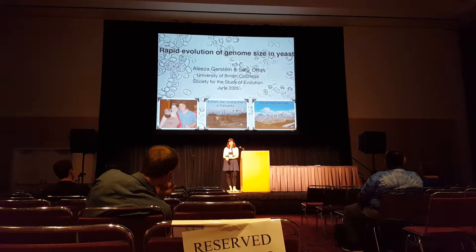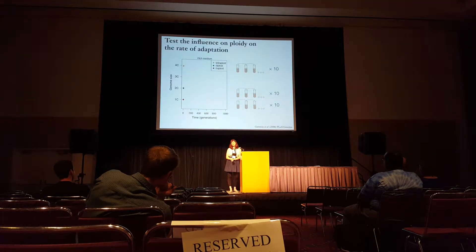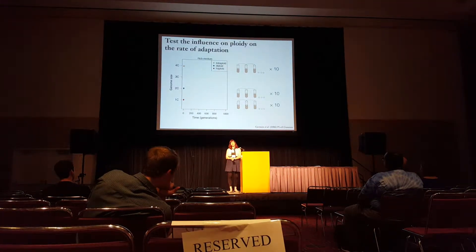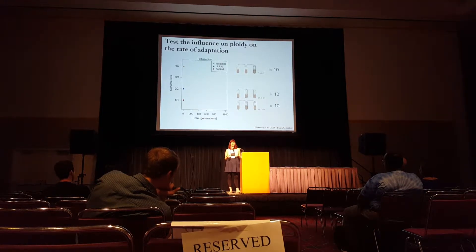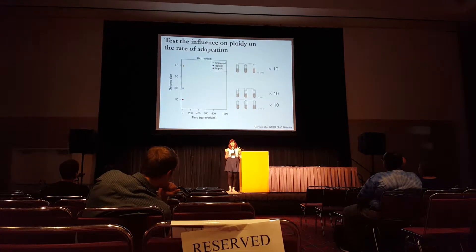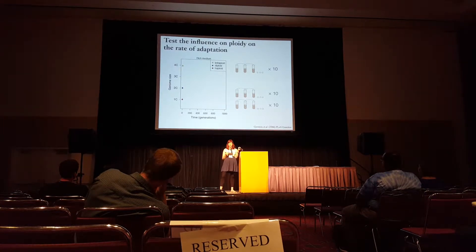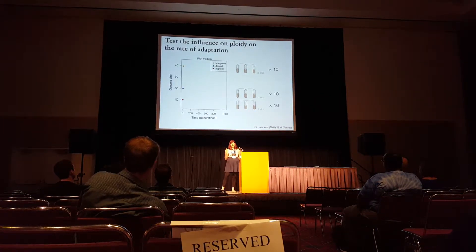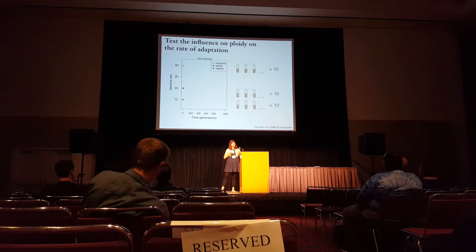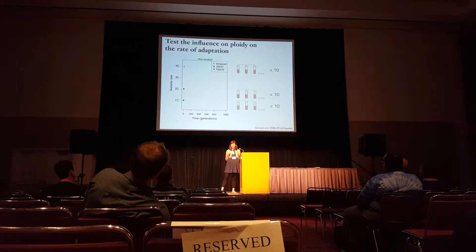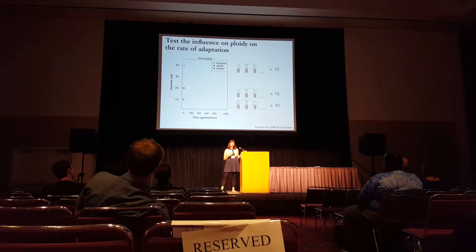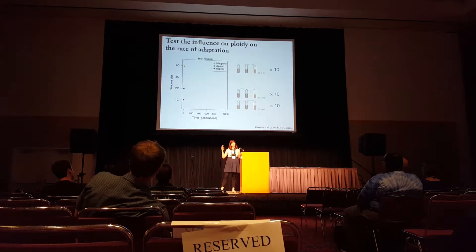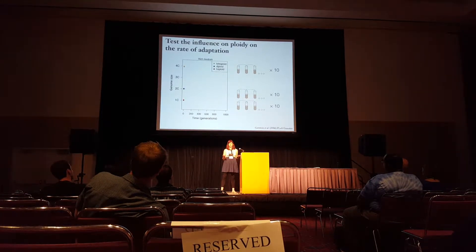What I presented at that meeting was an experiment where we set out to experimentally test the influence of ploidy on the rate of adaptation. Using fungal microbes, we have this incredible ability to control the genome. We can take haploid cells and create diploids and tetraploids that have the exact same gene complement — so they're homozygotes — but just different in ploidy.